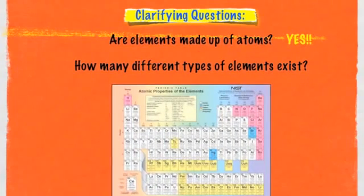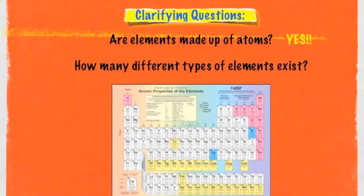How many different types of elements exist? The way to discover this is to look at a periodic table of the elements. For every block — every tile — of the periodic table of the elements, that represents a different element. This is not quite the most current periodic table, but we have somewhere in the neighborhood of 116 or 117 different types of elements that exist in our world.